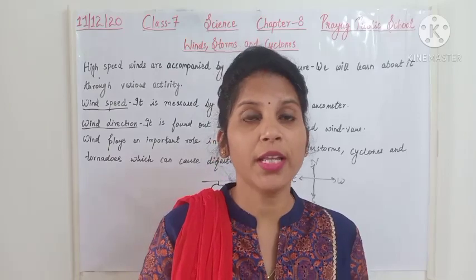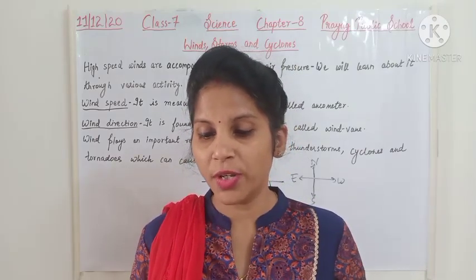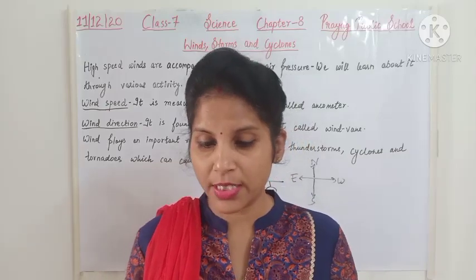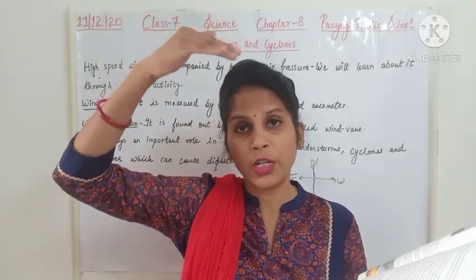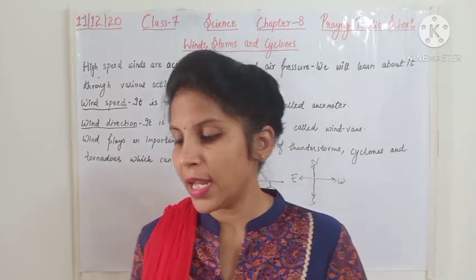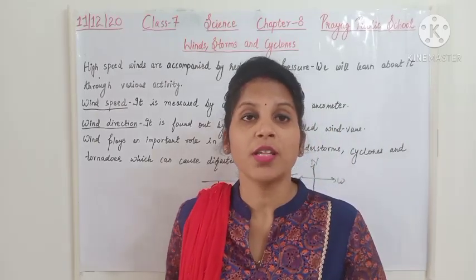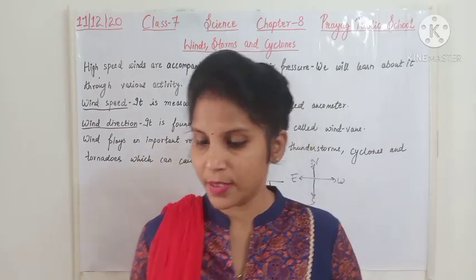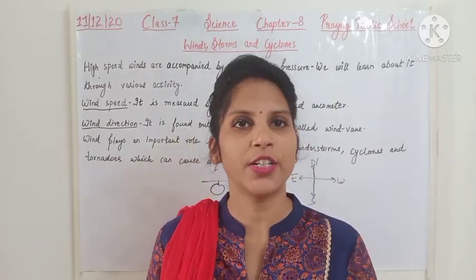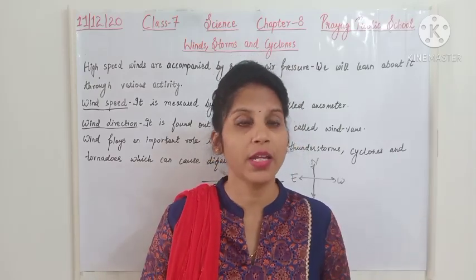Precautions to be taken during a thunderstorm: First, we should not sit near a window during lightning. Open garages, storage sheds, and metal sheds are not safe places to take shelter during lightning. Second, we should not take shelter under an umbrella with a metallic end during lightning, because the metallic end of the umbrella may act as a conductor for lightning — metals are good conductors of electricity and can attract lightning.